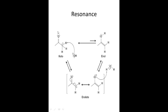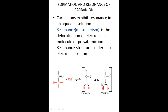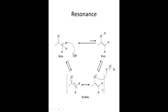We have this ketone in an alkaline solution. The base can abstract one of these hydrogens and results in the formation of a carbanion. There can be a shifting of this bond so that the pi bond electrons move to form the enolate. So the carbanion and the enolate are resonant structures because they tend to exist in equilibrium in an aqueous solution, caused by the delocalization of electrons in the molecule or polyatomic ion.